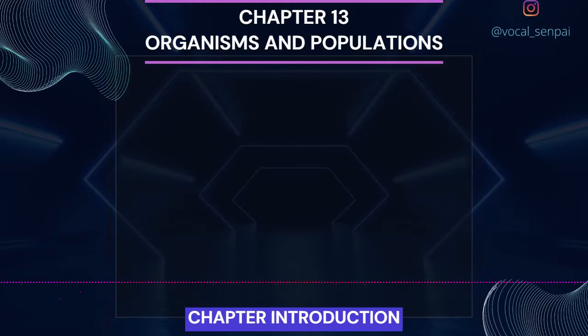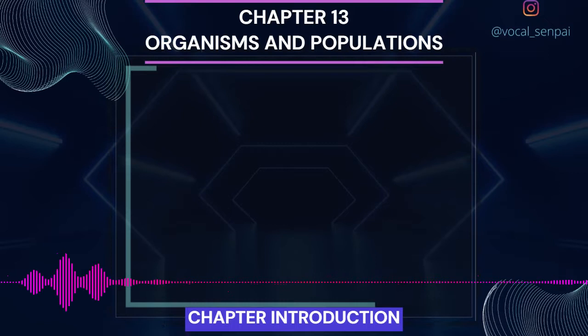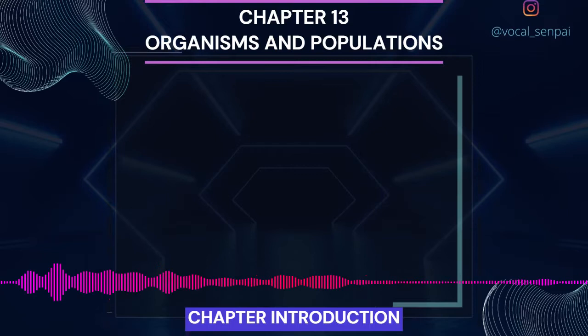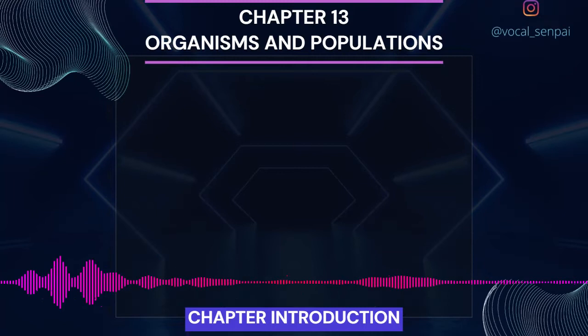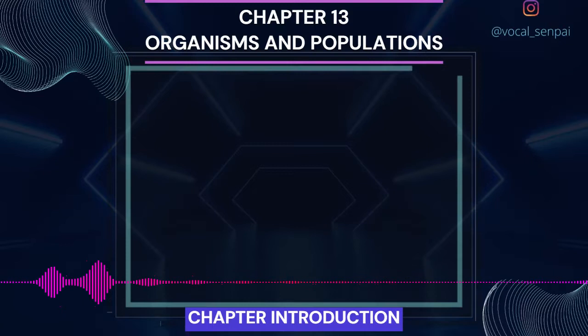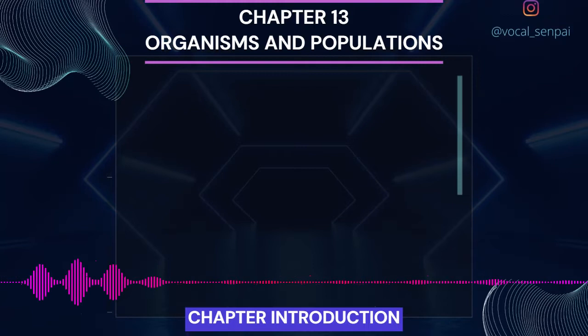Chapter 13: Organisms and Populations. Our living world is fascinatingly diverse and amazingly complex. We can try to understand its complexity by investigating processes at various levels of biological organization: macromolecules, cells, tissues, organs, individual organisms, population, communities, ecosystems and biomes. At any level of biological organization, we can ask two types of questions — how type questions seek the mechanism behind the process, while why type questions seek the significance of the process.